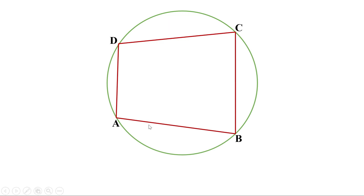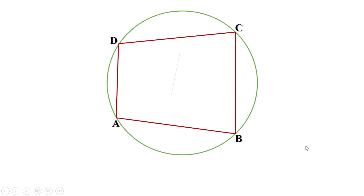Now, is there any relation between the angles of a cyclic quadrilateral? Let us draw a diagonal AC. Then this is an arc and this is its alternate arc. Therefore, angle B and angle D are angles on the alternate arcs.